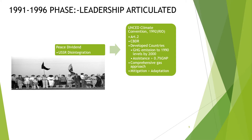Thereby, developed countries were directed to reduce their greenhouse gas emissions to 1990 levels by 2000. They also had to give financial assistance to developing countries. A comprehensive gas approach was finalized in which three gases were targeted: carbon dioxide, methane, and nitrous oxide. Mitigation was given more priority than adaptation, which was considered a local issue that could be resolved by provincial and local governments.